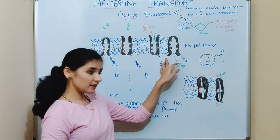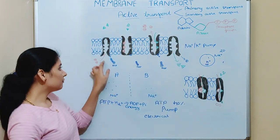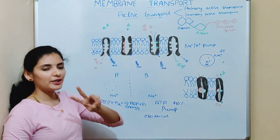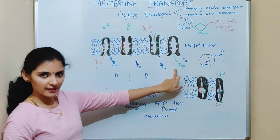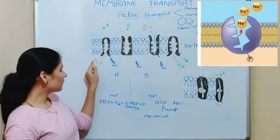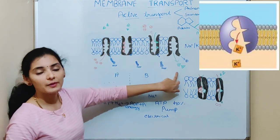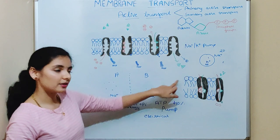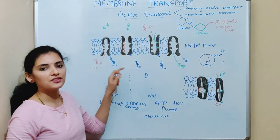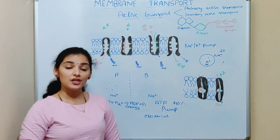Consider this example: in each cycle, for every 3 sodium ions moving out, only 2 potassium ions are entering in. So 3 sodium ions move out, but only 2 potassium ions enter.